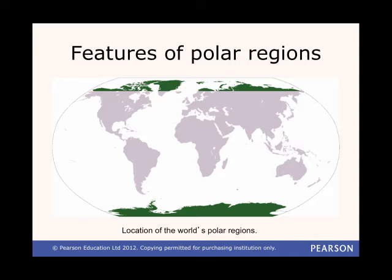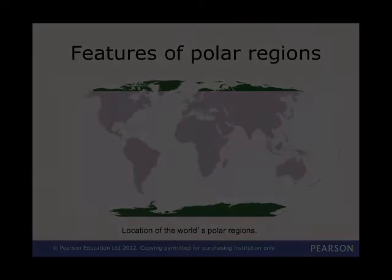Ice dominates the polar landscape, but actually North and South are very different. The North Polar region is mostly water — the Arctic Ocean — while the South Polar region is mostly land, the continent of Antarctica.